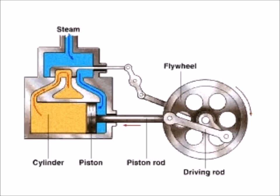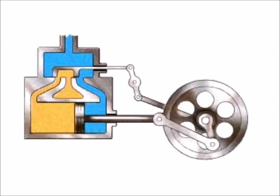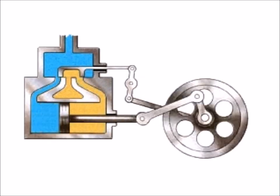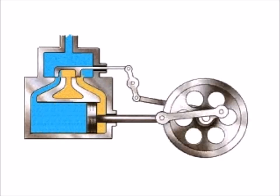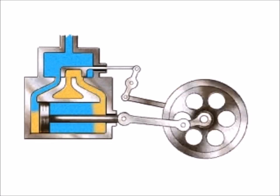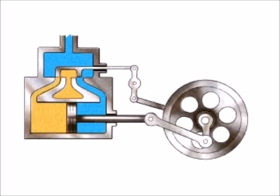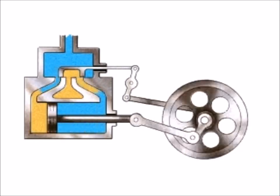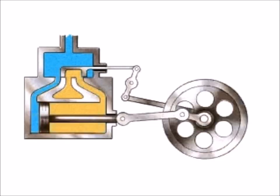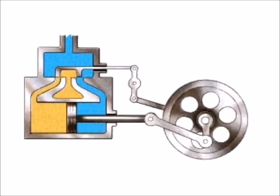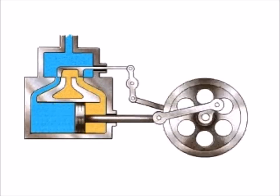The piston is attached to the piston rod. As the piston rod goes in and out, it drives another rod called the driving rod. The driving rod turns a wheel called the flywheel, which turns steadily even when the piston is at the end of its stroke and is not pushing.